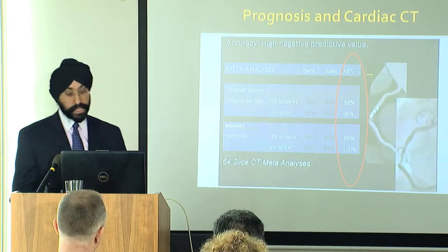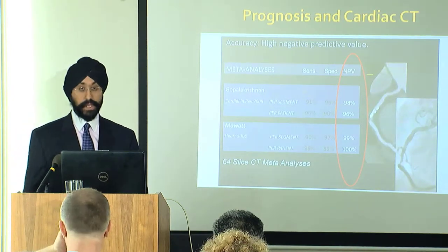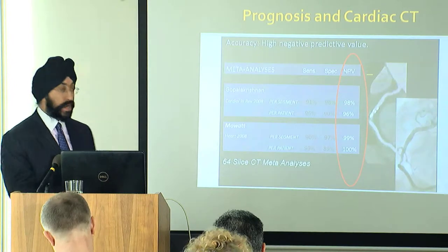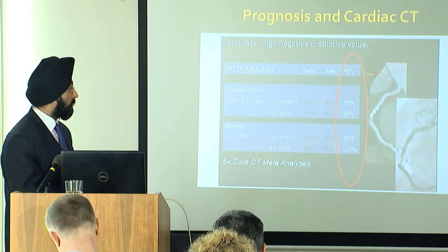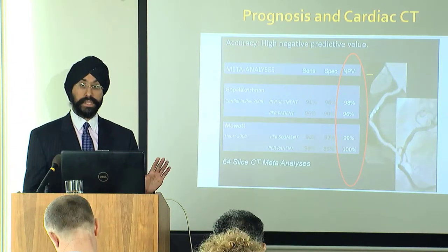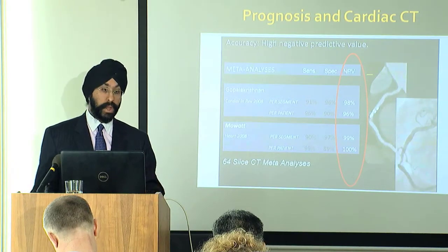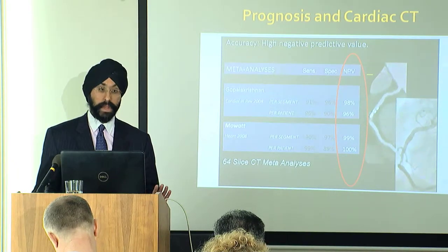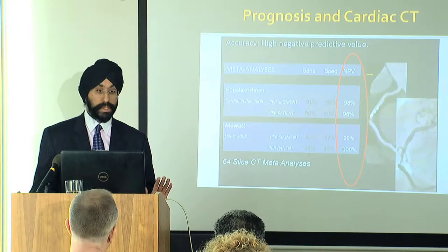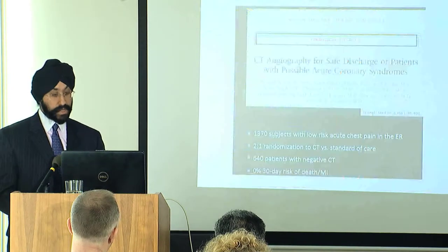CT coronary angiography is very good at ruling out coronary disease — the negative predictive value is very high. If we see someone with no coronary disease, we can say their event rate is going to be low. There are lots of studies now showing that. We also now have new emerging data on acute patients with CT coronary angiography, from the New England Journal of Medicine last year — patients presenting to the emergency department with acute coronary syndromes.